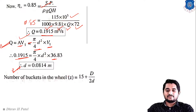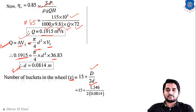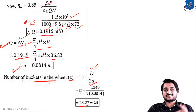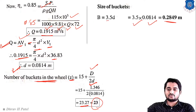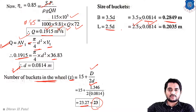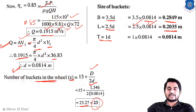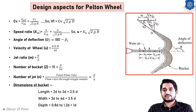The number of buckets equals 15 plus D/(2d) equals 15 plus 1.346/(2 × 0.0814), giving 23.27. Since the number of buckets cannot be fractional, we round to 23 buckets. Finally, the bucket dimensions: width equals 3.5d equals 3.5 × 0.0814 equals 0.285 m; length equals 2.5d equals 2.5 × 0.0814 equals 0.2035 m; depth equals 1.0d equals 0.0814 m.